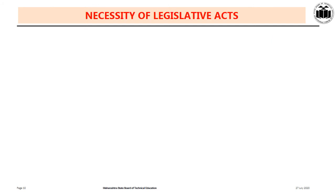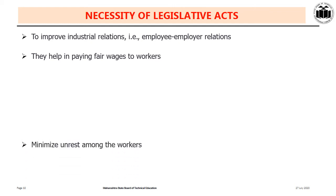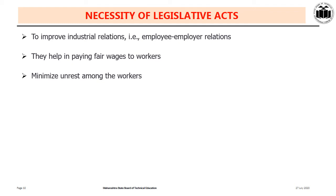Necessity of the legislative acts: to improve the industrial relationship between the employee and the employer. They help in paying minimum wages to the workers — for this there is the Minimum Wages Act. To minimize unrest among the workers there is the Industrial Disputes Act. To provide compensation to the worker or the dependent of the worker if there is any accident, there is the Workman Compensation Act.